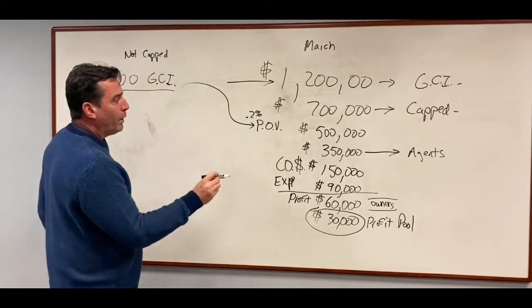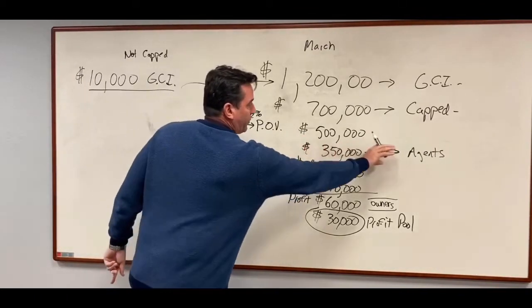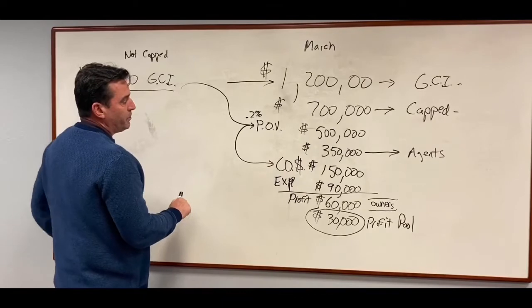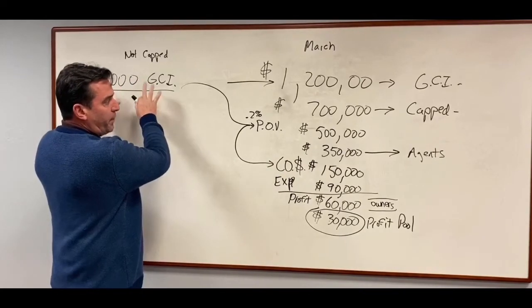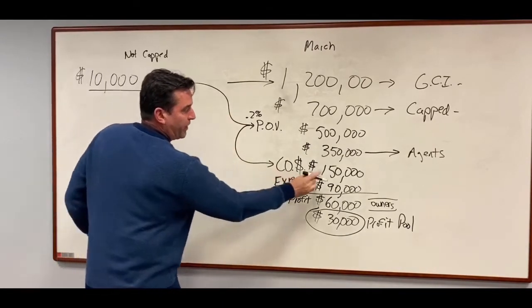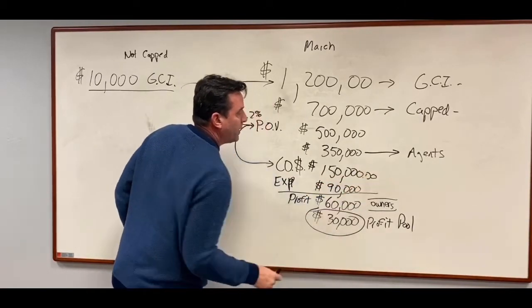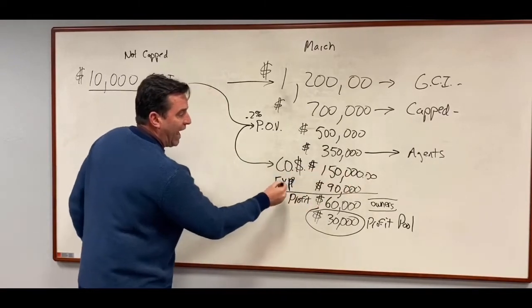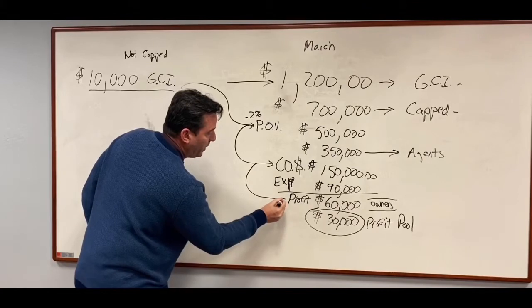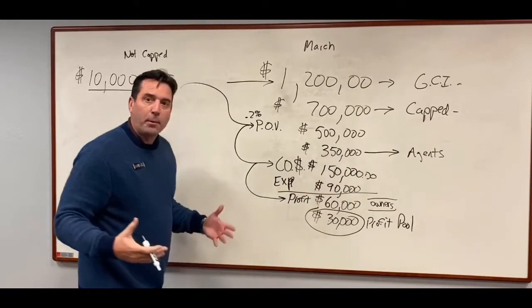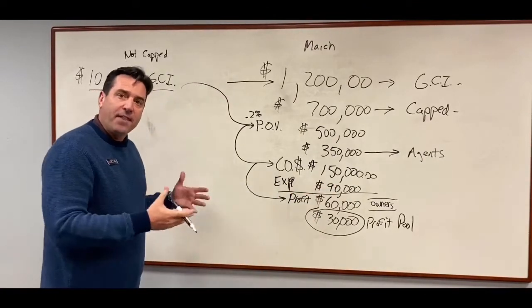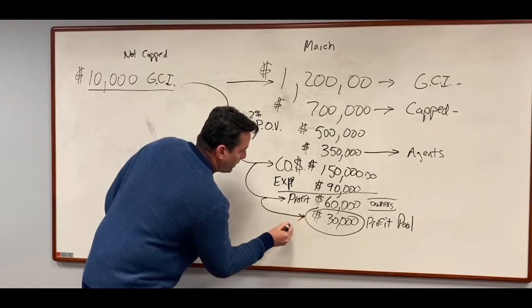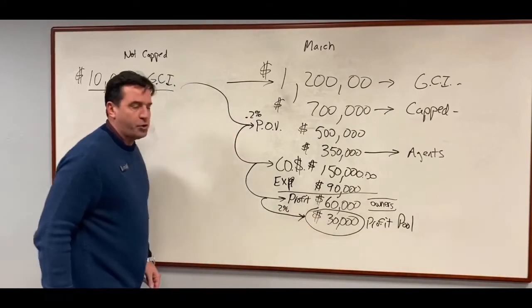$10,000 is 2% of a half a million. Okay? So, what would happen, once the agents get paid, if it's 2% of $500,000, doesn't it also stand to reason that this agent has contributed 2% of the company dollar? Let me figure that. Yes. And if this agent has contributed 2% of the company dollar after expenses, doesn't it stand to reason that they're responsible for 2% of the profit? And if they have contributed 2% of the profit, shouldn't it also stand to reason that they're responsible for 2% of the profit share pool?